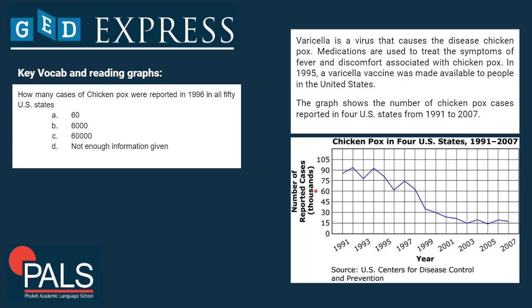Answer A is wrong. Some of you might already know why — on the y-axis it says 'number of reported cases in thousands,' so we don't have 60 reported cases but 60,000 reported cases. If you got that, you might have answered C — but I have to disappoint you, C is still not correct. We have to look at the title: the graph shows us the number of chicken pox cases in four US states, but the question asks for reported chicken pox cases in all 50 US states.